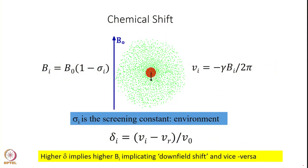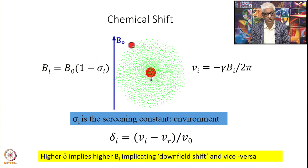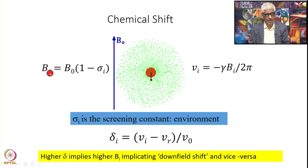We were discussing chemical shifts — this is a quick recap of what we did last time. We have a nucleus with an electron cloud around it, indicated by the green dots. We have an applied magnetic field B0. This B0 field induces a current in the electron cloud, which produces a magnetic field opposing the externally applied field. Therefore, the field seen by the nucleus is B_I, given by B0 times (1 minus sigma_I).